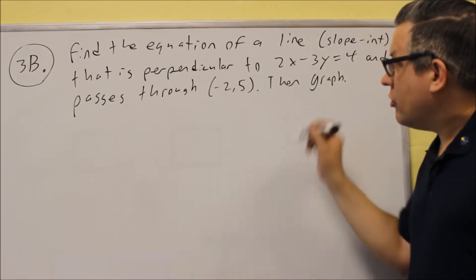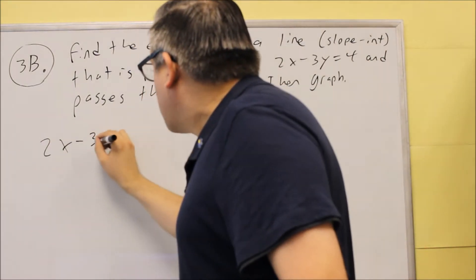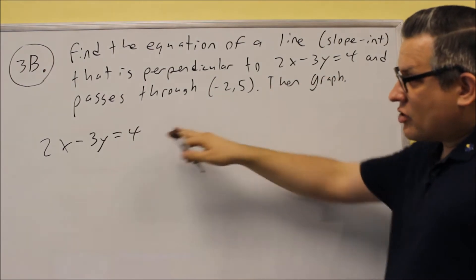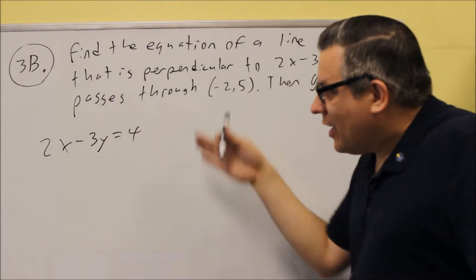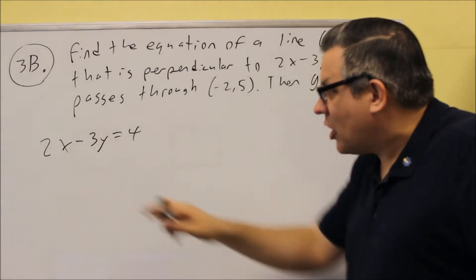First thing we want to do is figure out what the slope of the original line is. So we'll start with that, 2X minus 3Y equals 4. In order to find out the slope, we're basically going to solve for Y, and whatever number is in front of the X is going to end up being our slope.